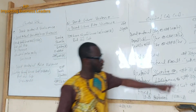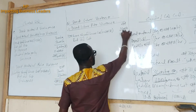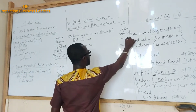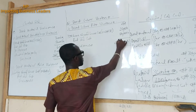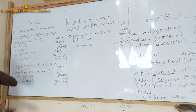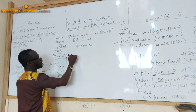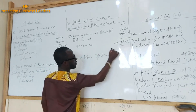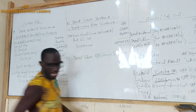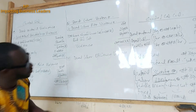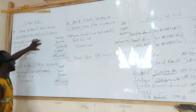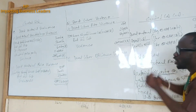Direct labor efficiency varies. Now, like we did here, the direct labor efficiency variance is also based on the units produced.